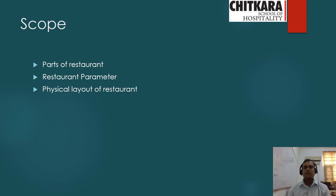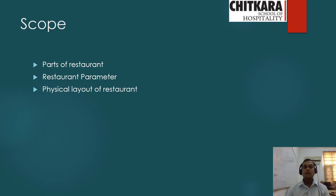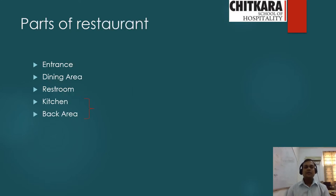The intent for today covers: parts of a restaurant — what are the different parts; restaurant parameters — the different dimensions and types of tables used for seating guests; and the physical layout of a restaurant — how the layout should look.